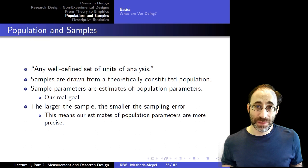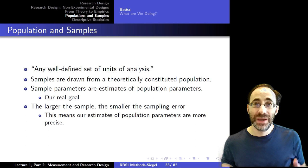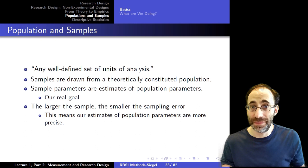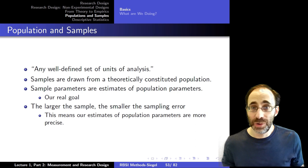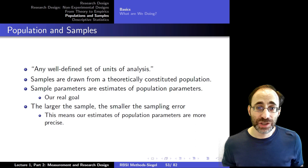Populations are any well-defined set of units of analysis. They are theoretically determined — determined by your theory and the scope conditions on your theory. The population relevant to testing your theory is the population of units, whether they be countries, states, localities, people, or subgroups of people, that your theory applies to. So if your theory applies to all people making political decisions across the entire world, the population is all people who ever make political decisions across the entire world.